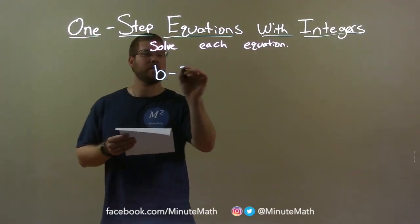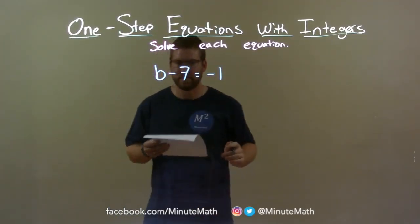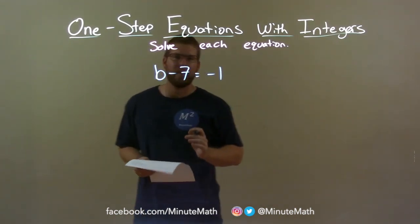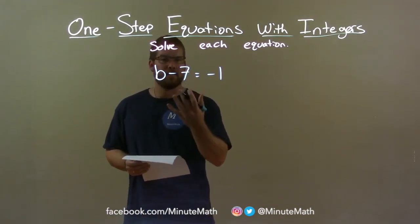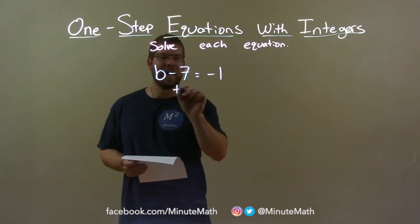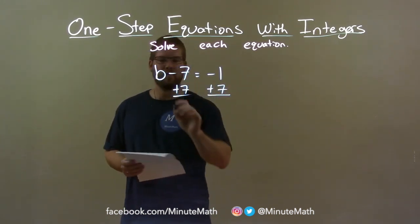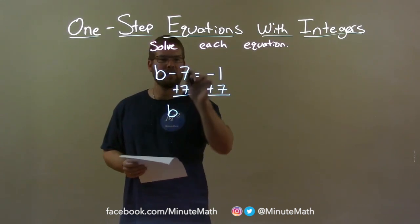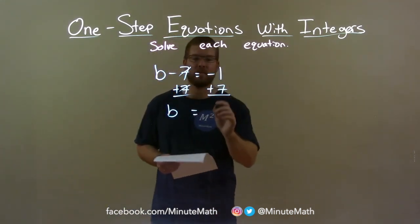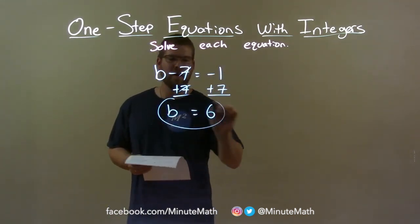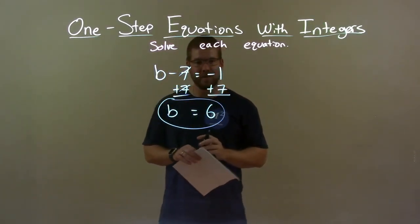b minus 7 equals negative 1. I want to get b by itself. There's a subtract 7 next to it — opposite of subtraction is addition. If I add 7 to both sides, that gives me b by itself. The 7s cancel, and negative 1 plus 7 is a positive 6. So my final answer here is b equals positive 6.